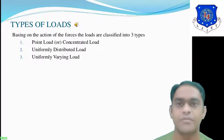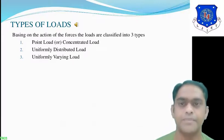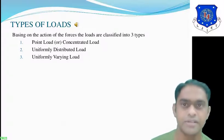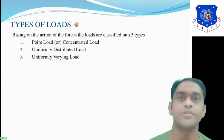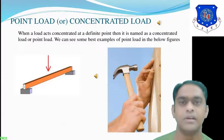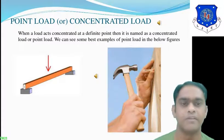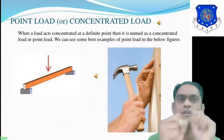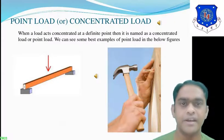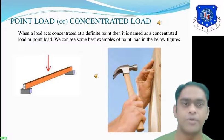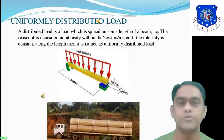There are mainly three types of loads acting on a beam. The first is point load or concentrated load. When you hammer a nail on a wall, you are applying a load on a single point — this type of load concentrated at a definite point is named a concentrated load or point load. We can see some best examples of point load in the figure.